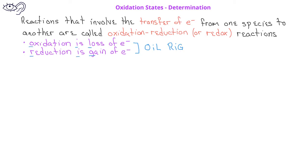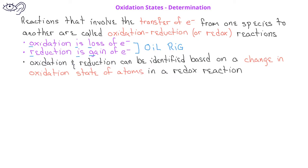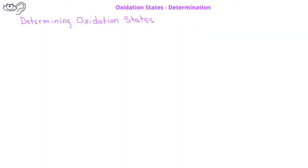In order to determine if something has lost or gained electrons, we need to be able to identify the oxidation states of atoms on each side of a redox reaction. This can be done using the following guidelines.